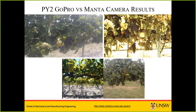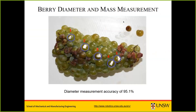In year two we also looked at berry diameter and mass measurement. Taking a single bunch, measuring berry diameters carefully and weighing the berry masses, we developed algorithms — through a student and an undergraduate — able to detect the diameter of the berries on the bunches to 5% error, or 95% accuracy. Applying this in the field would be great for understanding berry diameter not just for yield prediction but also for influencing berry and bunch quality.